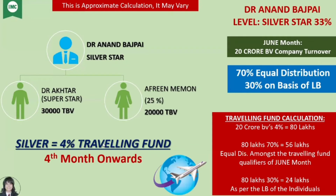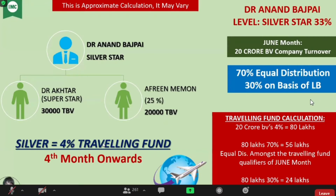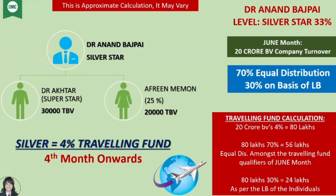This 30% will be your leadership bonus, given to you on a basis. Let me explain again simply. What does the company do? The fund is 4% of the traveling fund from the company turnover in that month. Because the traveling fund company gives 4%, the company takes 4% of the turnover. If the company turnover in June was 20 crores, then 4% is 80,000,000. The company first removes 4% from the turnover. And in this 4%, 70% of the money will be equal to everyone.